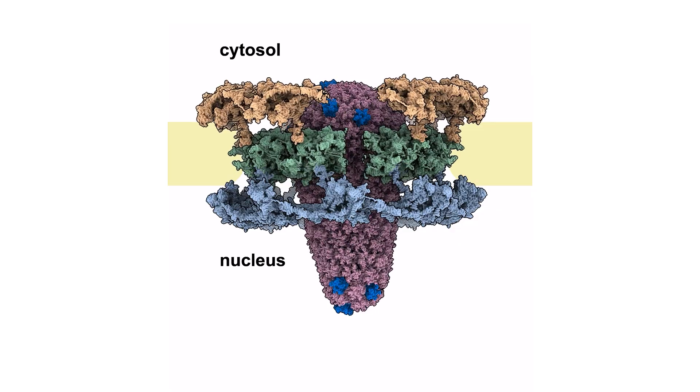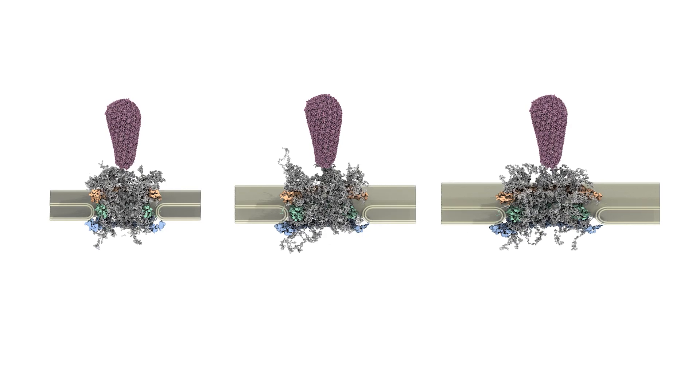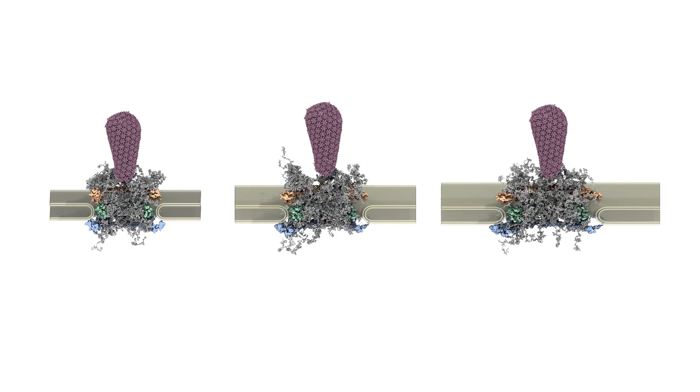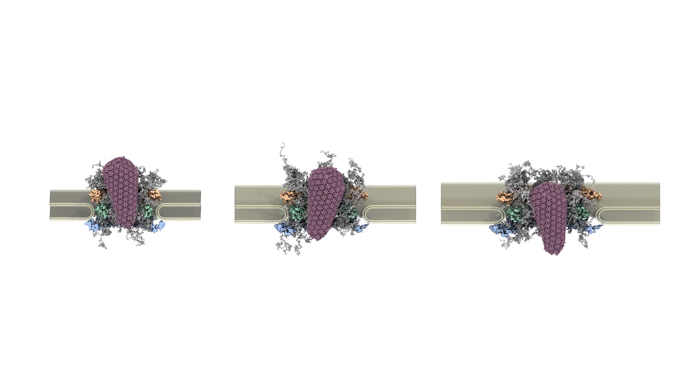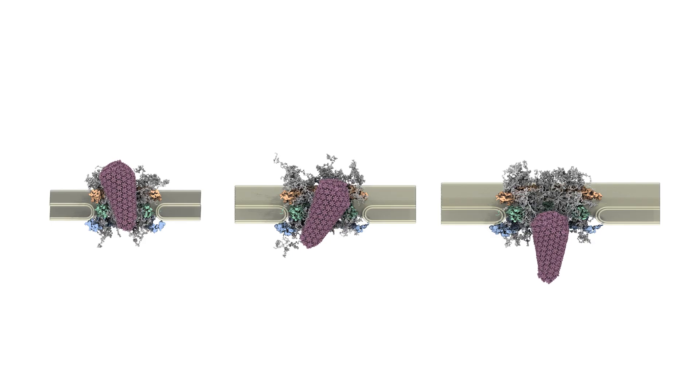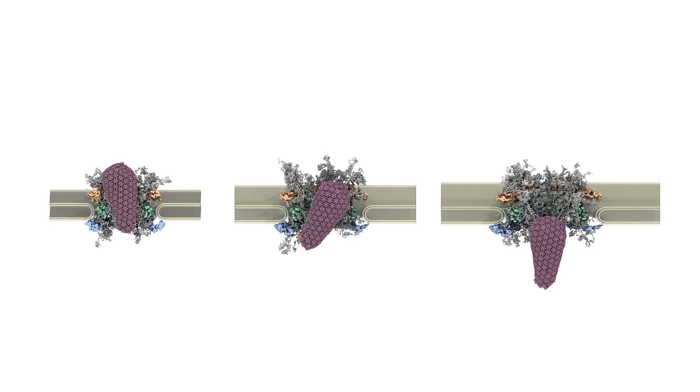Finally, the capsid binds to CPSF6 in the nucleus and gets released from the nuclear pore. Molecular dynamics simulations allowed us to look at the process of capsid passage dynamically. The disordered FG node proteins that play a critical role during capsid nuclear entry can never be visualized with cryo-ET but could be modeled in our simulations.